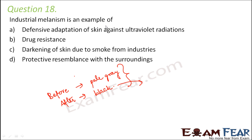So, is industrial melanism an example of defensive adaptation against ultraviolet radiation? No — ultraviolet radiation has nothing to do with it. Drug resistance? No. Darkening of skin due to smoke from industry? Melanism is darkening due to increased melanin pigment, but it has no direct relation to smoke — indirectly, smoke darkened the background, which is why these variations were supported by nature. The correct answer is option D: protective resemblance with the surroundings — the black colored moths resembled their surroundings, survived better, reproduced more, and so more black colored moths were produced. That is the concept of industrial melanism.